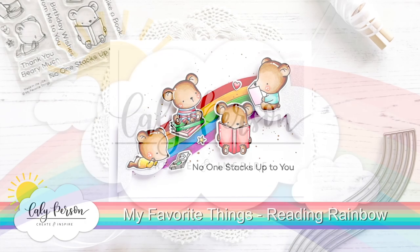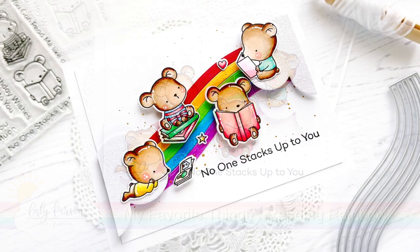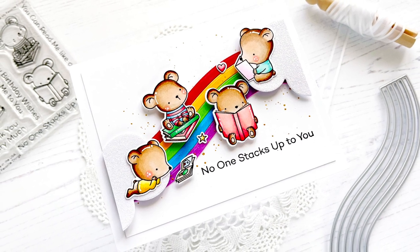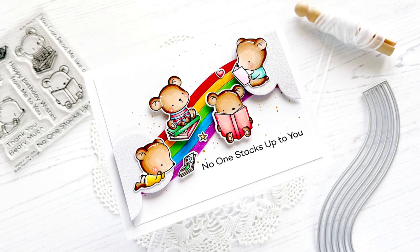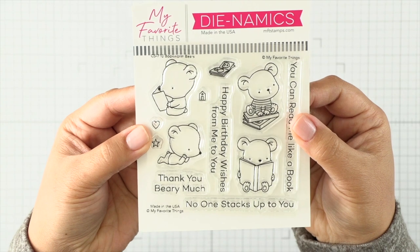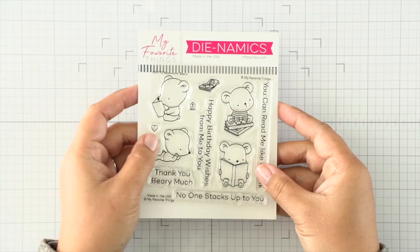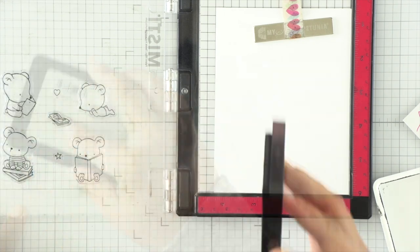Hi everyone, this is Callie. Thanks so much for being here with me today. Today we're creating this nostalgic reading rainbow card. I saw these bookworm bears from MFT and it's a mini set, so it's a great price point. What I envisioned in my head was this rainbow and these little bears just reading all across the rainbow and it reminded me of my childhood.